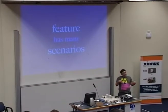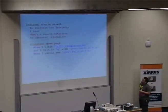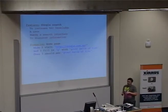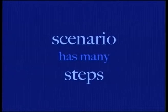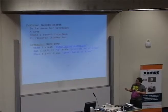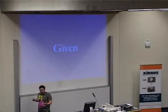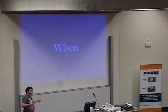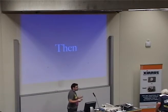A feature itself has many scenarios. A scenario is the way a user is actually interacting with that feature. Here we're saying that for a Google search, there's a home page. When I go to google.com.au and search for 'great balls of fire,' then I should see 'great balls of fire' in the search output. The scenario itself has many different steps. The steps that Cucumber comes bundled with are: given, when, then, and also an 'and' keyword.